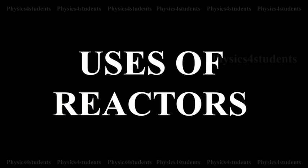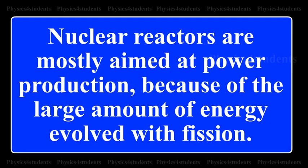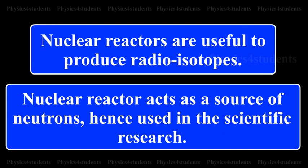Uses of Reactors. Nuclear reactors are mostly aimed at power production because of the large amount of energy evolved with fission. Nuclear reactors are useful to produce radioisotopes. Nuclear reactors act as a source of neutrons, hence used in scientific research.